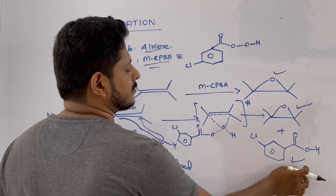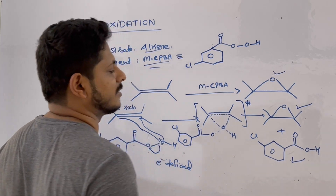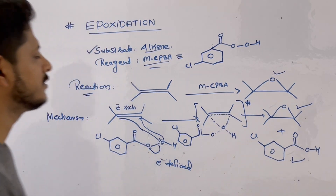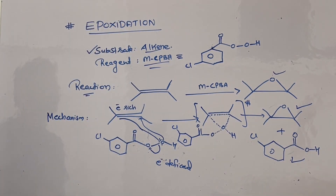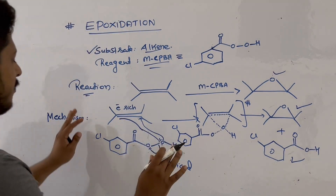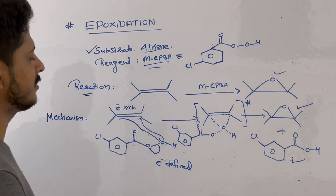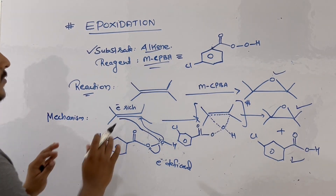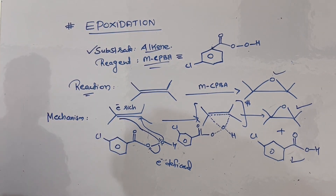Finally, we get the epoxide as the main product and meta-chlorobenzoic acid as the byproduct. This is the mechanistic part of the epoxidation reaction using mCPBA.